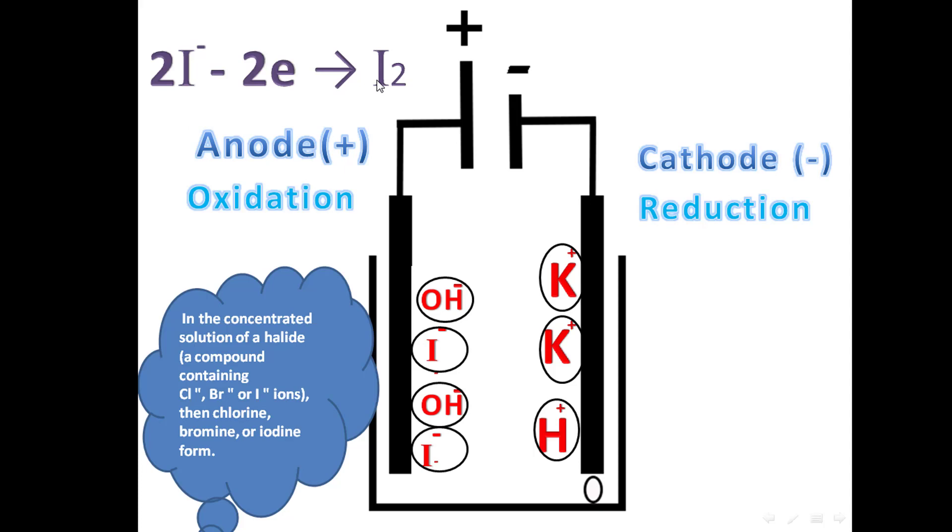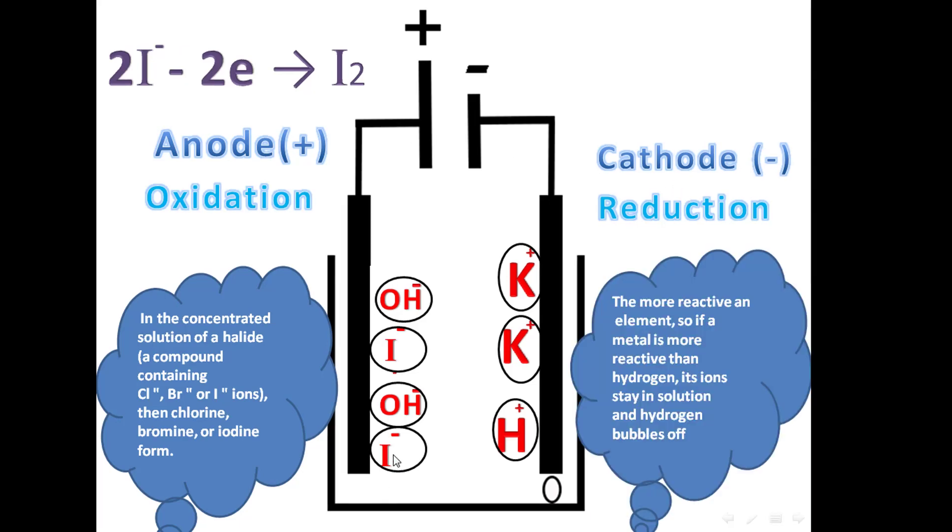I- attracted to the anode loses an electron. This electron will move through the circuit and comes to the cathode. Here we have two positive ions: K+ and H+. Which of these ions will accept the two electrons?